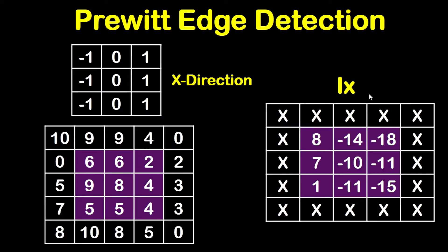We will start by getting Ix. To get Ix, we will use the Prewitt kernel of the x-direction. We will put the center of the kernel on the first required pixel in the highlighted region. So negative 1 will be on 10, 0 on 9, 1 on 9, negative 1 on 0, 0 on 6, 1 on 6, negative 1 on 5, 0 on 9, and 1 on 8.